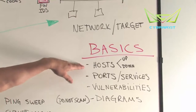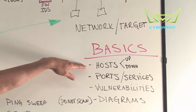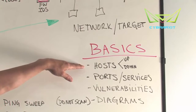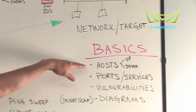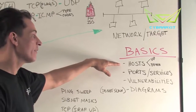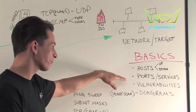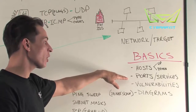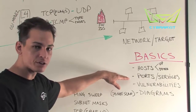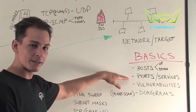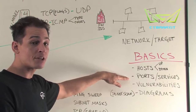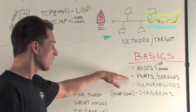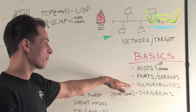Starting with the basics: is our host up or down — is it alive or dead? If we get a response back, it's up. If we don't get anything or it times out, we consider the host down. Once we know the host is alive, we can determine what ports or services it's responding to. One IP address could have 30 or 40 services, or just one.